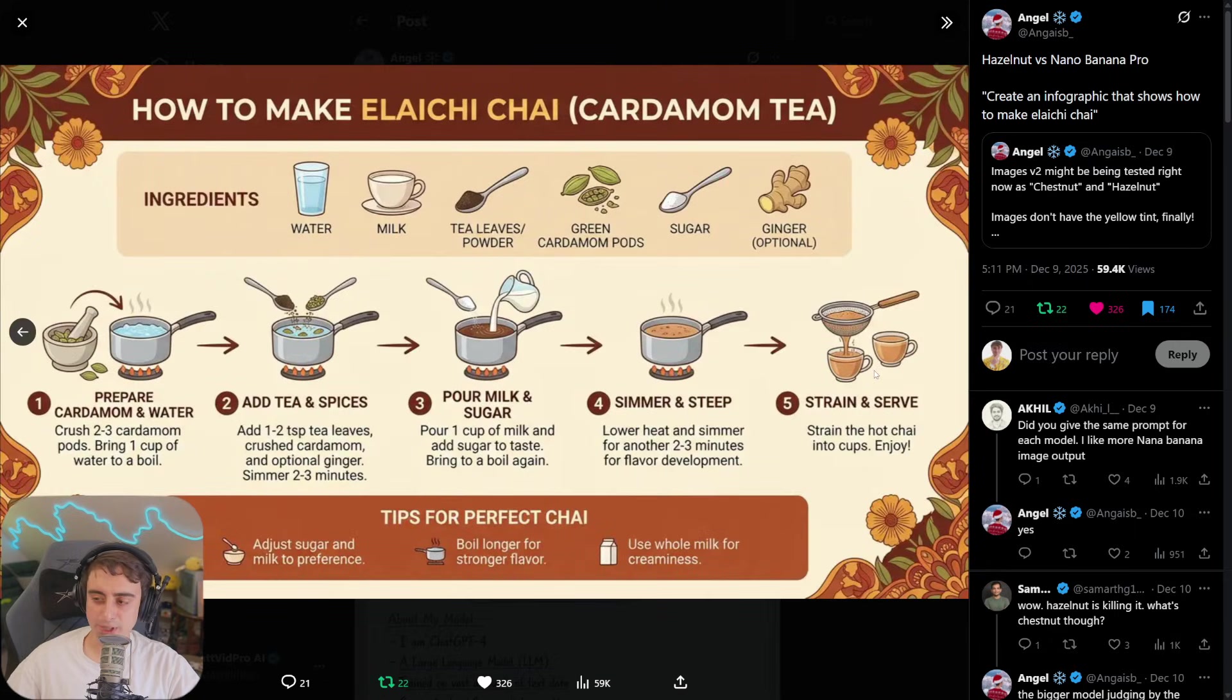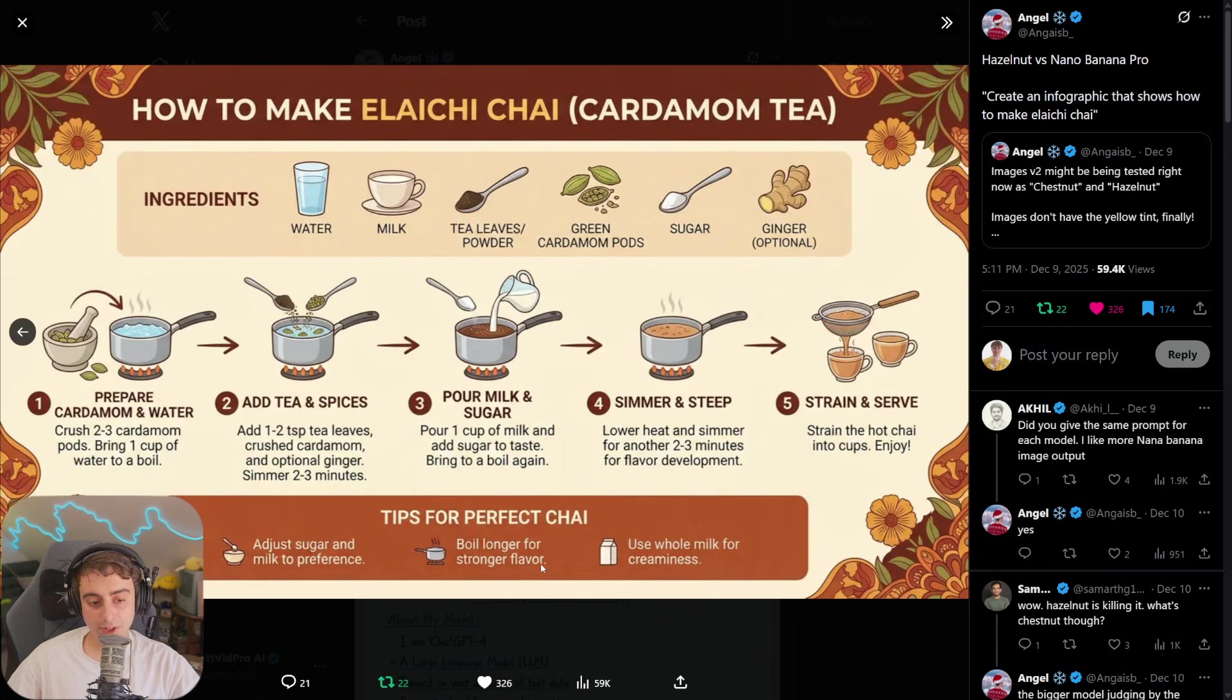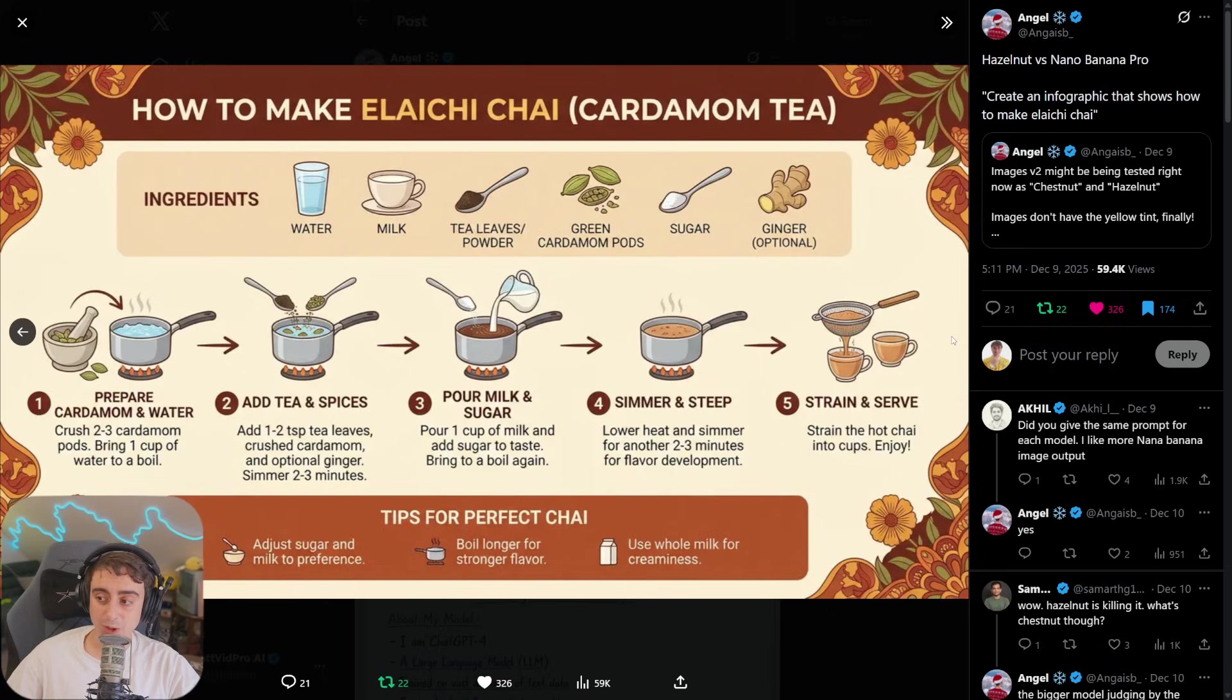Maybe we're getting a little bit too much into the semantics. It even has tips, though, at the bottom, for the perfect chai. Only tip we have here is to adjust sugar and spices to taste. Boil longer for stronger flavor, or use whole milk. Both of these are pretty good. I think this really just comes down to user preference. Which kind of design and explanation do you like more?